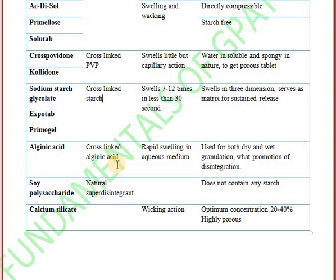Next one is alginic acid. Alginic acid is a cross-linked alginic acid. Its mechanism of disintegration involves rapid swelling in aqueous medium when it comes in contact with water. It is used in both dry and wet granulation and promotes disintegration.